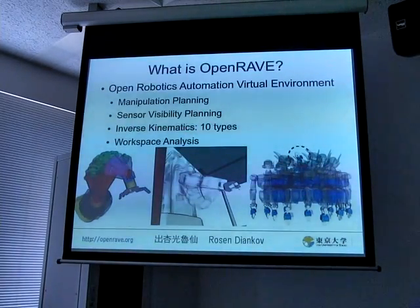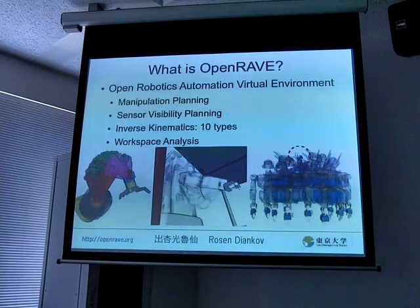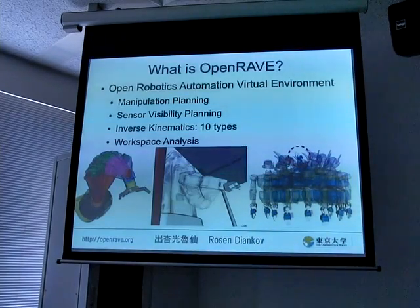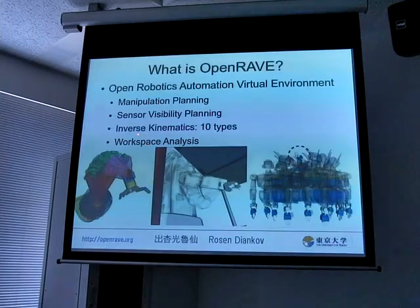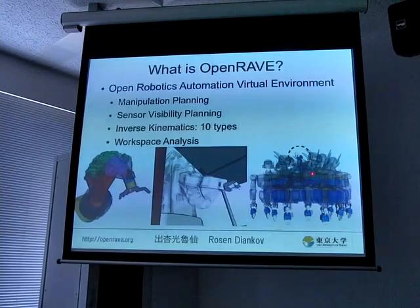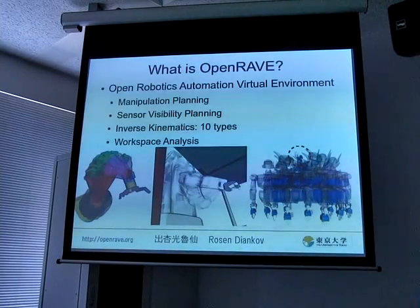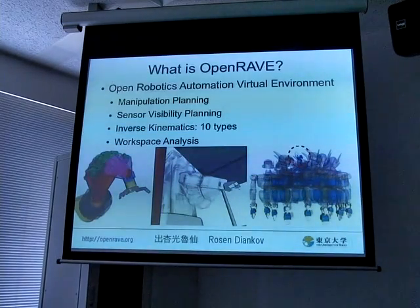There are about ten different types of inverse kinematics — not just your 6D position or orientation, but also look-at inverse kinematics, three-dimensional translation inverse kinematics, and five-dimensional inverse kinematics. It also does interesting workspace analyses — for example, where should the robot go in order for its hand to be somewhere, which is the inverse inverse kinematics problem, but it's not forward kinematics.